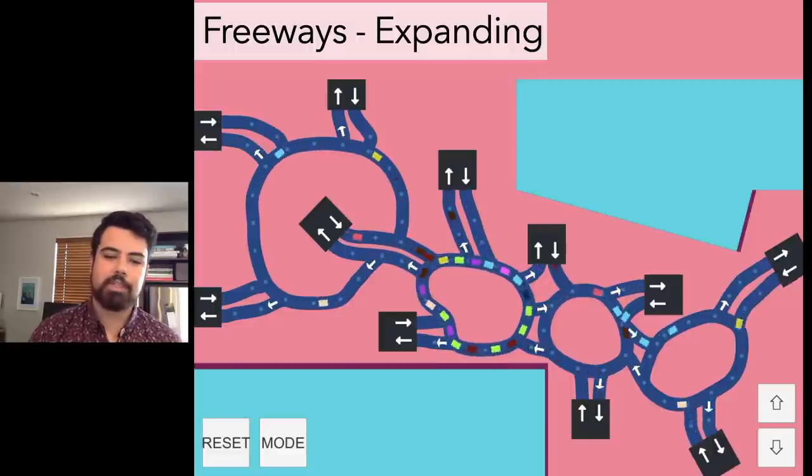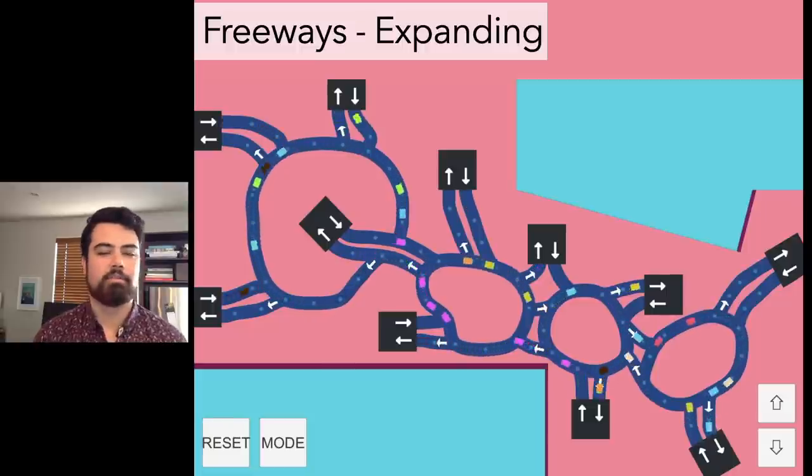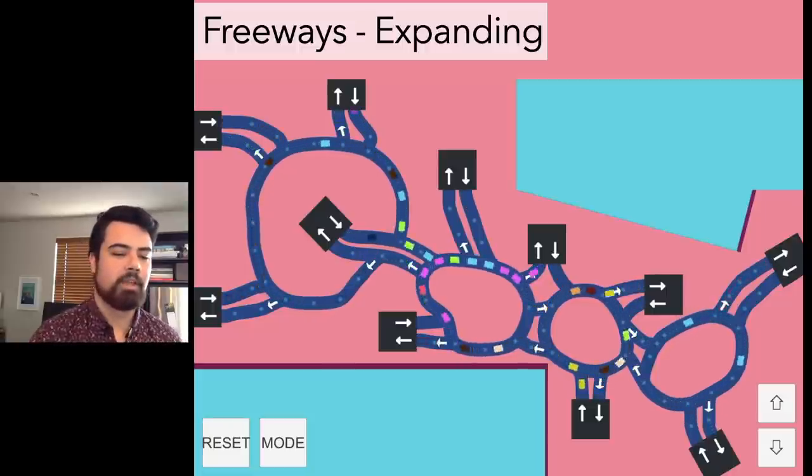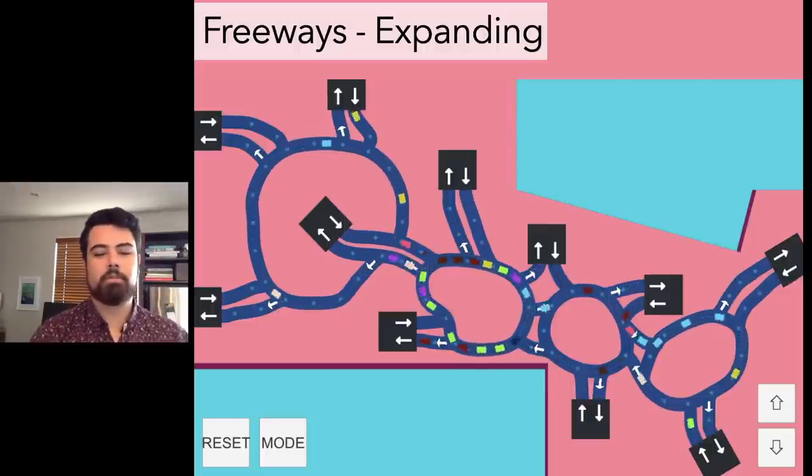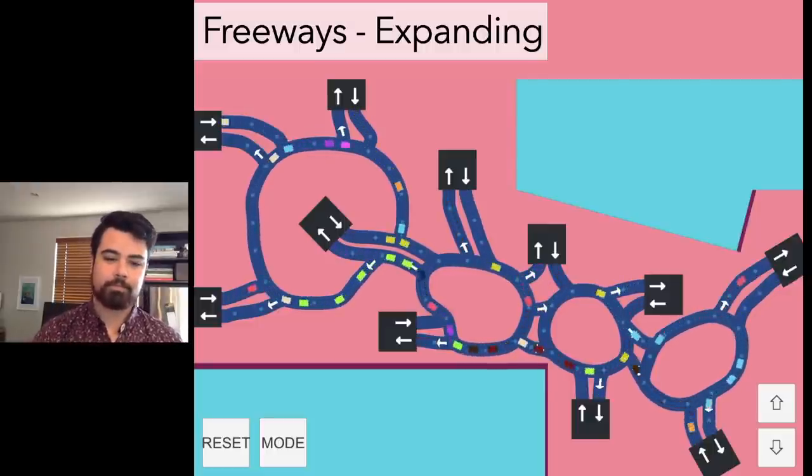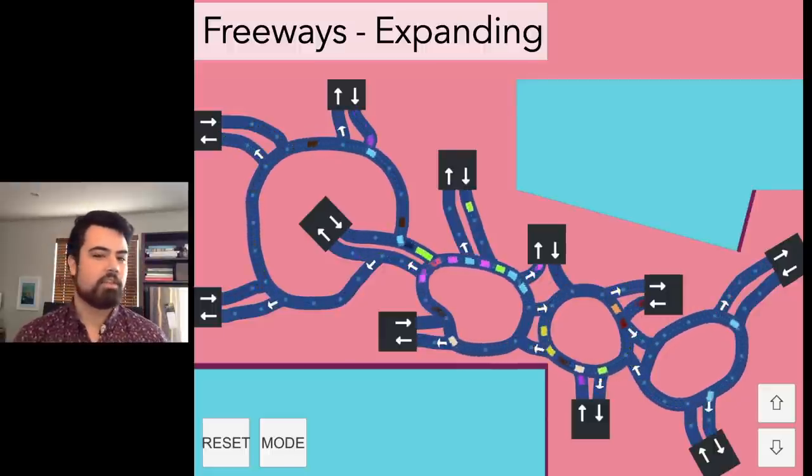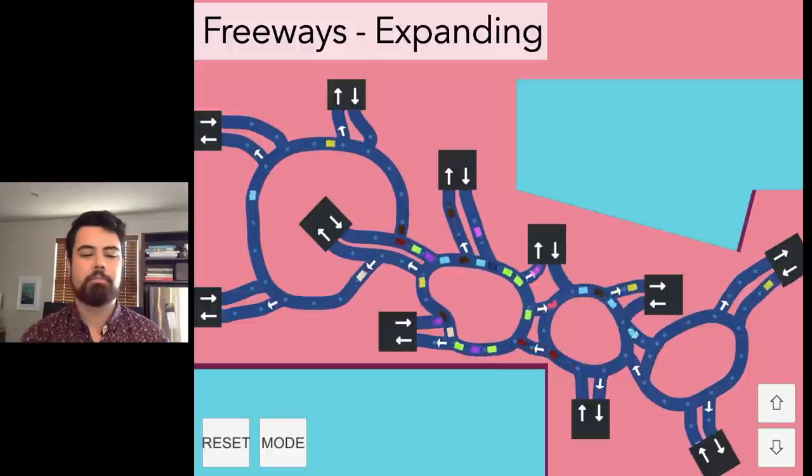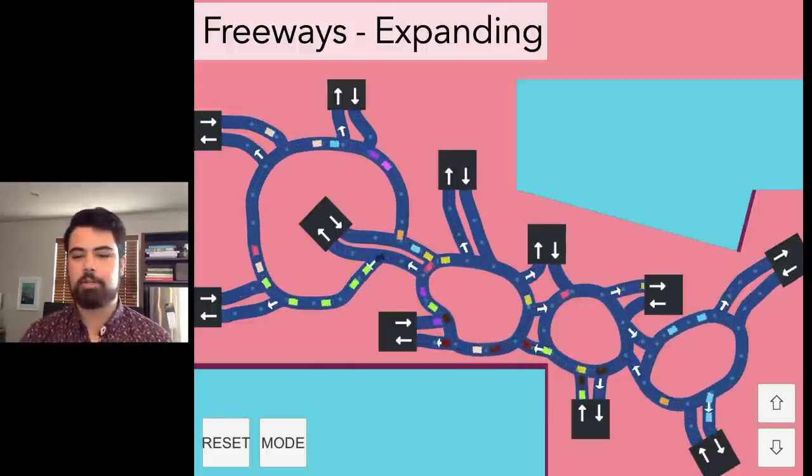The reason you can only restart in Freeways is because there's no very good way to deal with cars that are on roads that players want to remove. Additionally, the lost condition in Freeways is a traffic jam, but if an evolving network jams up, how does the player improve their network?